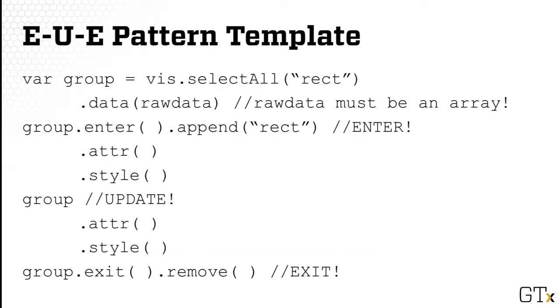This is a typical skeleton of a D3 program that applies the Enter-Update-Exit pattern. In the first few lines, you will see that we're loading the data using the .data command. And then after that, we'll be entering the Enter phase. And then in the middle is the Update. And then finally is the Exit phase.